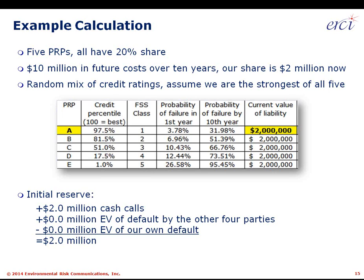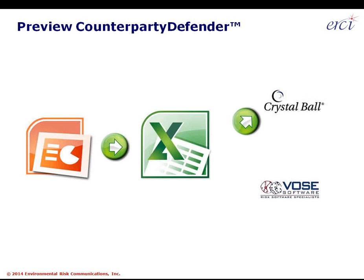Our current share on a current-dollar basis — no inflation, no discounting — is an expected $2 million. Assume a random mix of credit ratings where we are the best of five at financial stress score class one, PRP B is class two, C is class three, D is class four, and E is class five. Our initial reserve starts with $2 million of cash calls before factoring in the associated risk of counterparty default.